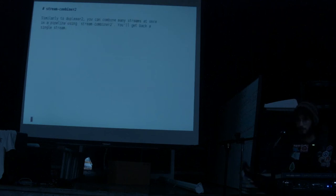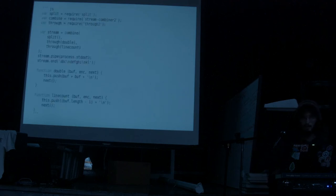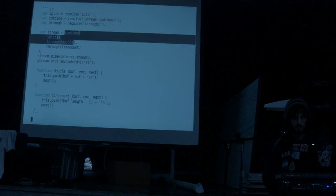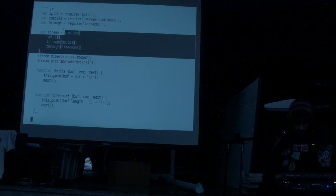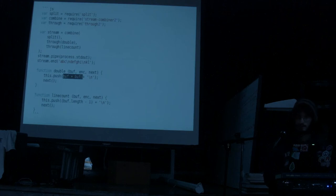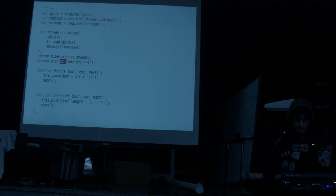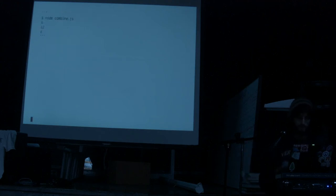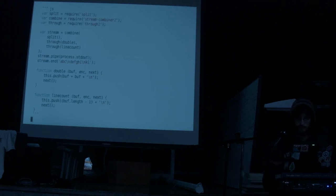There's another module called Stream Combiner, or Stream Combiner2 — it's like Duplexer but you can have as many streams as you want. Here's an example using Stream Combiner: we start with split, and every item gets passed into a double function that duplicates everything twice. Then we count the length of each line — should be double what we expect. If a line starts as 3 characters, output should be 6; if it's 6, it should be 12. We should get 6, 12, and 4. Stream Combiner is handy if you need to put something in front of Split.